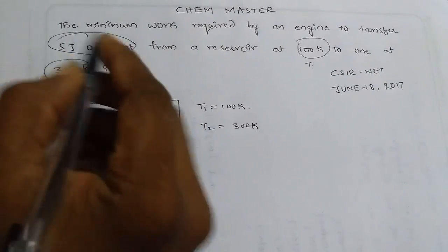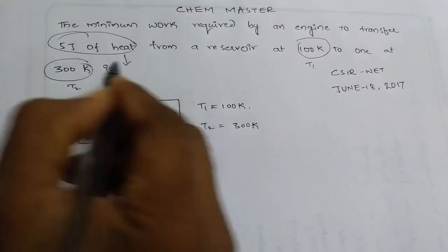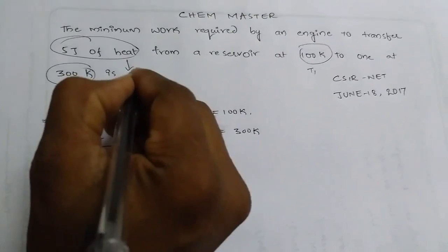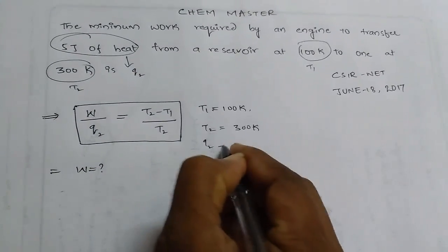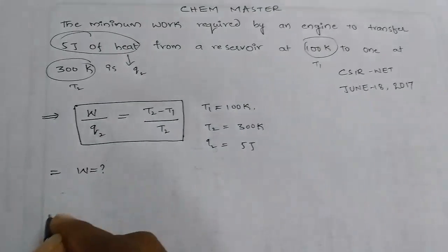To transfer 5 joules of heat, we can consider this as Q2. So Q2 is equal to 5 joules.